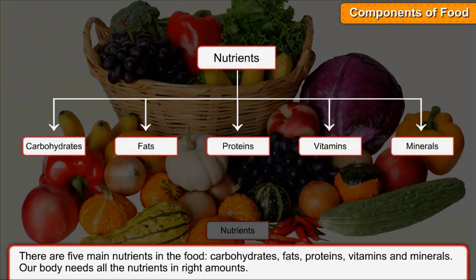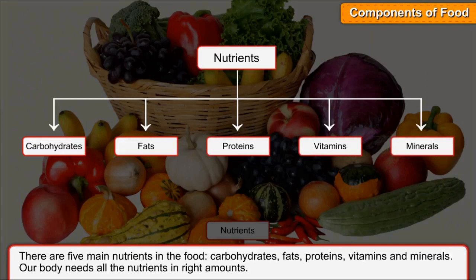Secondly, I would like to talk about components of food. Components are the substances which are found in food that we gain after eating. There are five major components: carbohydrates, fats, proteins, vitamins, and minerals. Our body needs all these components in the right amount.